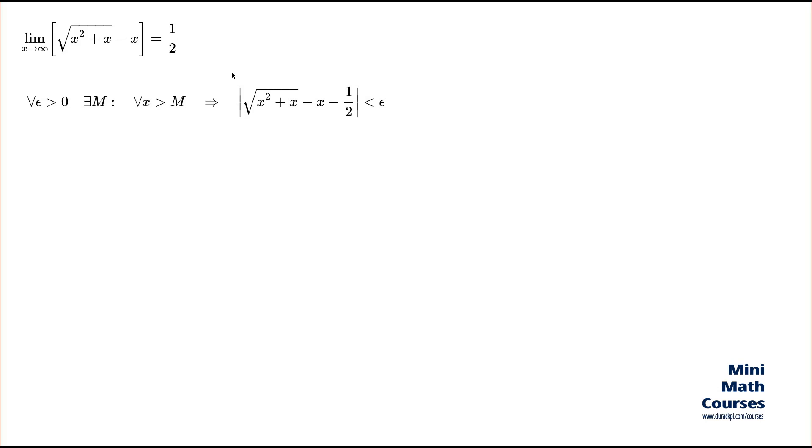In every actual proof, you have to present this M value very explicitly, and then show that the value M you presented works as intended. Normally when you search for such a value of M, you start with the inequality and transform this inequality into something simpler from where you can guess, based on your intuition and experience, what the M value might be. That's exactly what I'm about to do here. First, I'm going to transform this expression into something more suitable for guessing the M value.